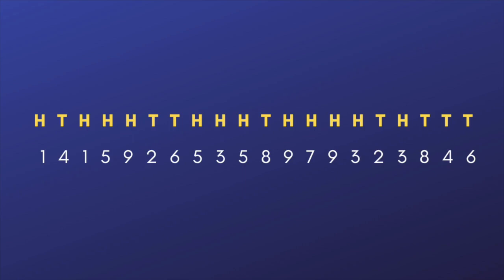So, are the digits of pi random? Technically no, because the first decimal digit will always be one, the second four, the third one, and so on, no matter how many times the sequence is generated.